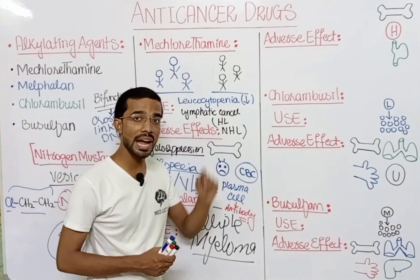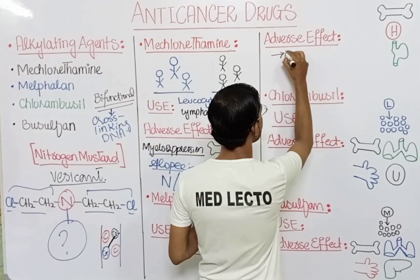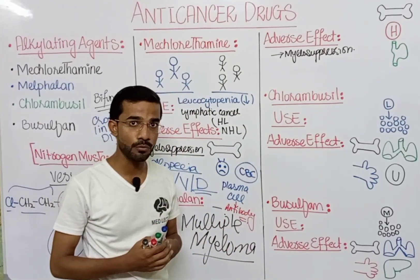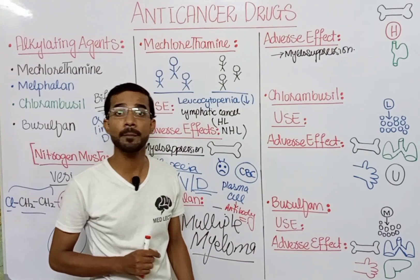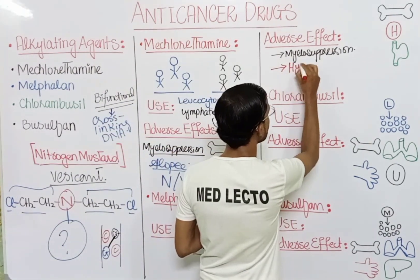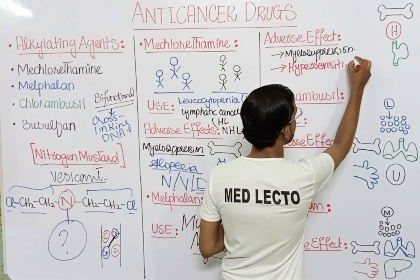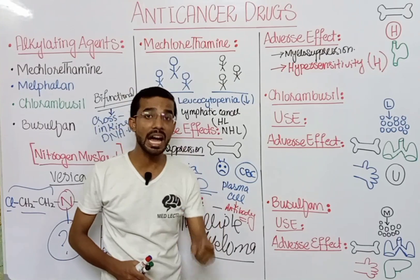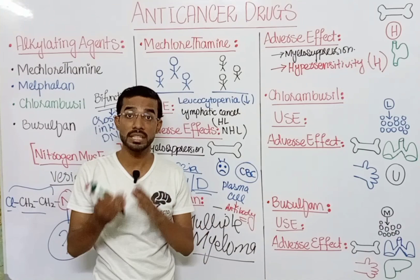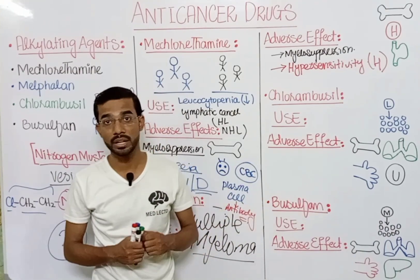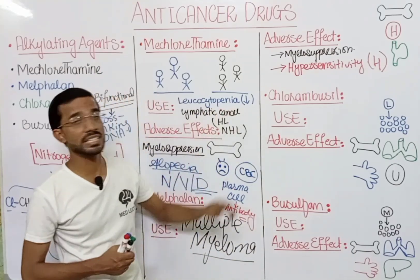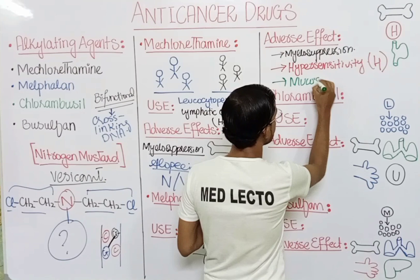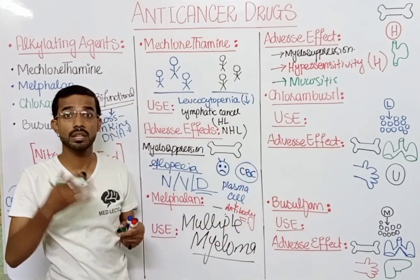Regarding adverse effects of melphalan: the most common is myelosuppression — suppression of bone marrow, leading to suppression of blood cell formation. You can also see hypersensitivity type 4 reaction, which is a cell-mediated or delayed hypersensitivity reaction in which cytotoxic cells and macrophages are activated. Additionally, you can see mucositis — inflammation of the GI tract, tongue, and esophagus.